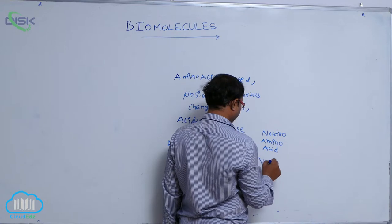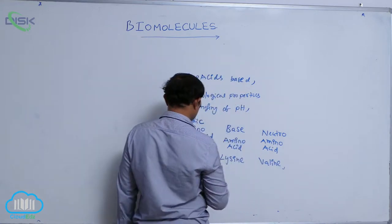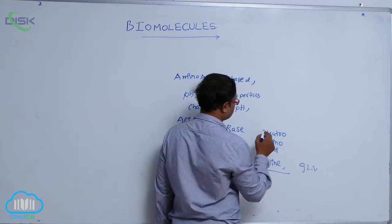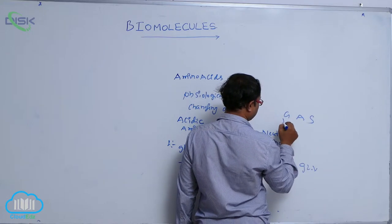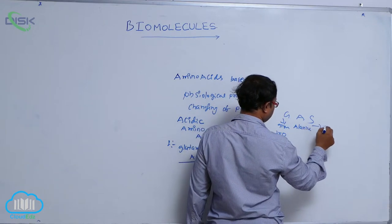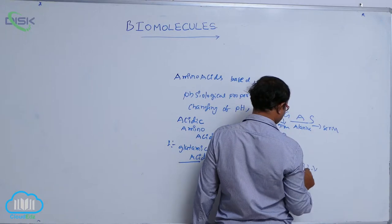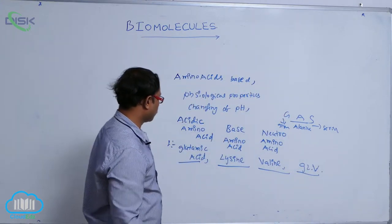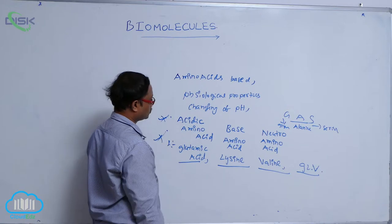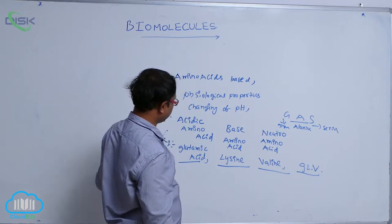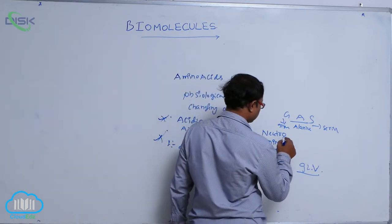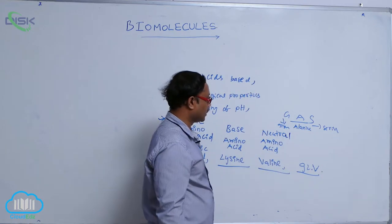Glutamic acid, lysine, and valine have the code GLV. Before that, GAS — meaning glycine, alanine, serine — has the code GAS, and the code GLV applies to glutamic acid, lysine, and valine. These are important points for objective and medical purposes. The acidic amino acid is glutamic acid, the basic amino acid is lysine, and the neutral amino acid is valine, code GLV.